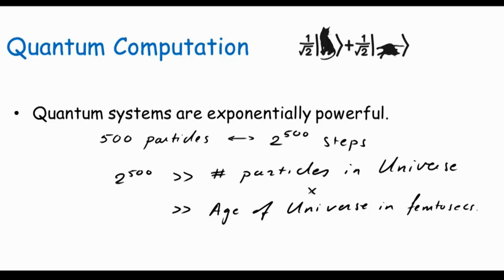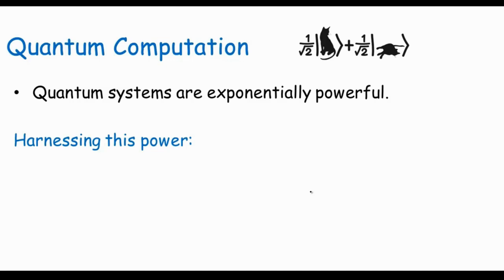So what this means is that if we could harness this computational power, then there's no way that in the classical universe we could match it, even if we were able to use the entire resources of the universe in that computation. But now, of course, the difficulty lies in harnessing this power. And there are several challenges and these are the challenges we'll speak about in this course.